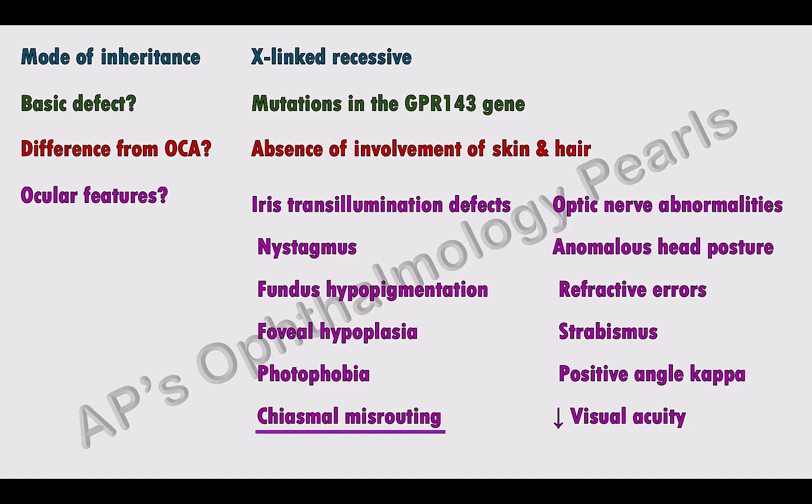Chiasmal misrouting refers to a majority of the temporal retinal fibers also crossing over at the optic chiasm. Normal optic nerve routing, as demonstrated on a selective visual evoked potential, almost rules out albinism.